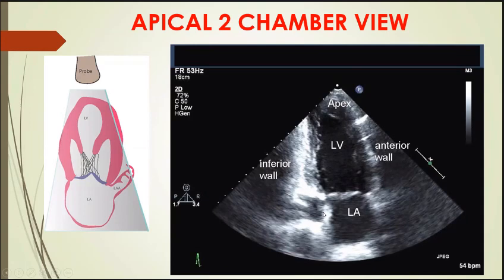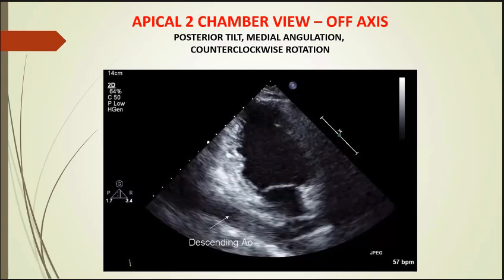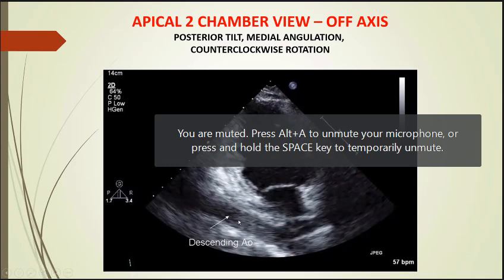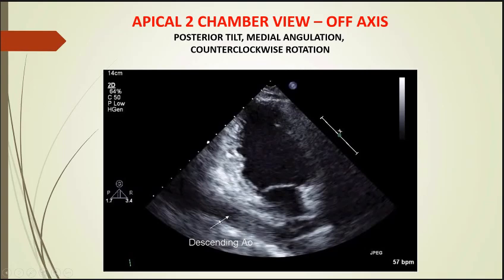The apical two-chamber view consists of the left atrium, left ventricle, and the mitral valve. Any pathologies in these three structures can be clearly noticed. The walls visible are the inferior wall of LV, apex of LV, and the anterior wall of LV, so any regional wall motion abnormalities in these walls can be clearly seen. If the view is very clear, we can also see the descending aorta, so any descending aortic aneurysms or aortic dissection can also be viewed here.